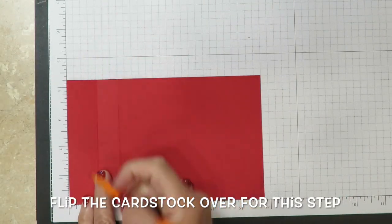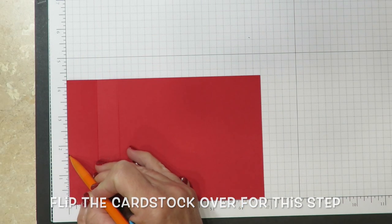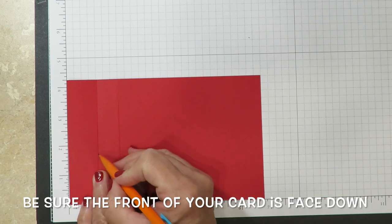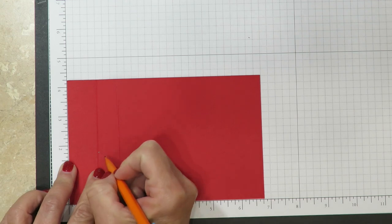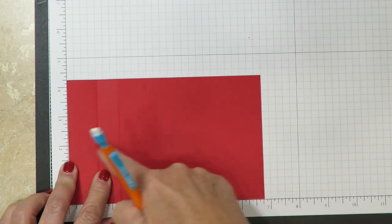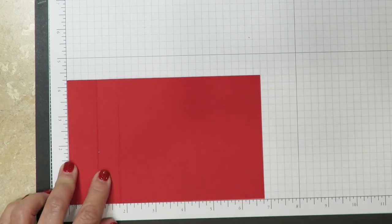I'm grabbing a pencil and at the one and three quarter inch mark which is here, I'm going to make a small tick mark directly across from it. That's going to give me an idea of the placement of where I need to put that small piece of cardstock that's going to be the wiper.